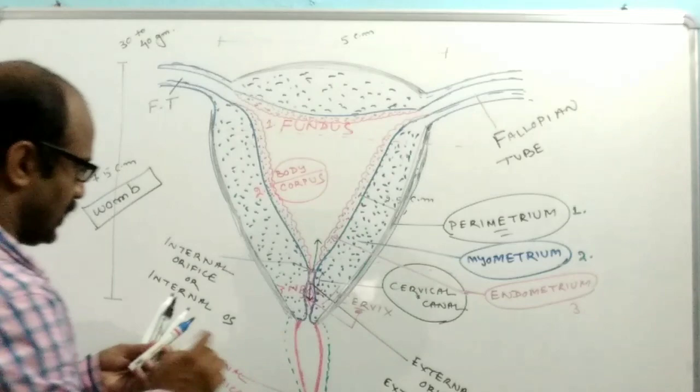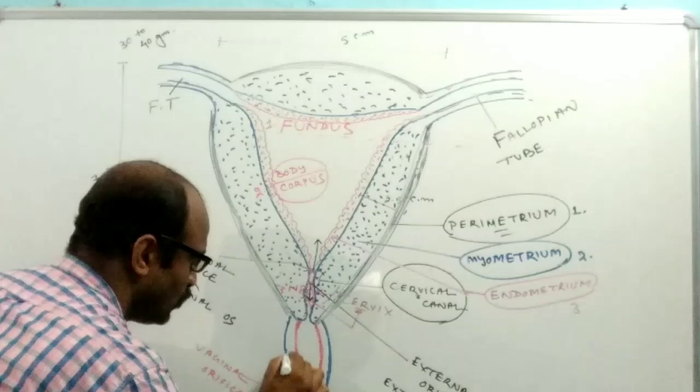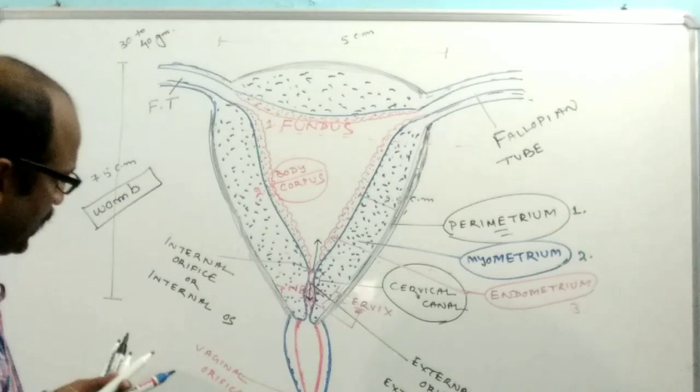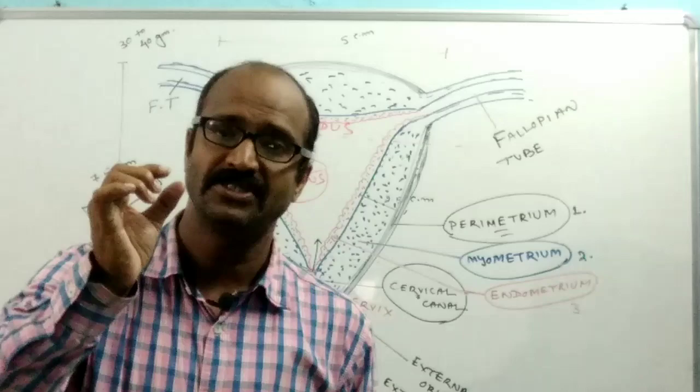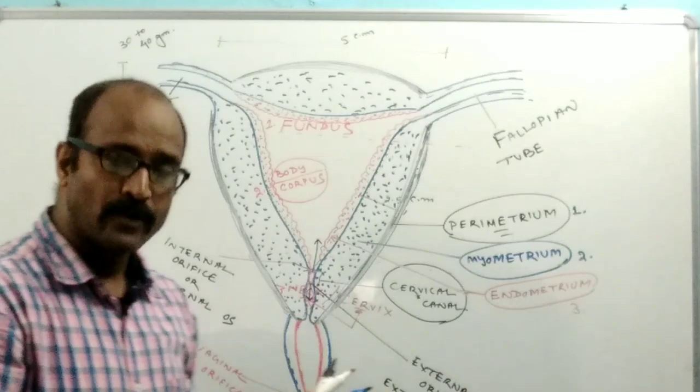The vagina is an elastic, highly elastic tube-like structure present between the rectum and the urinary bladder. The wall of the vagina is very elastic in nature but lacks glands, which allows it to accommodate during intercourse.